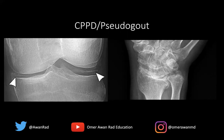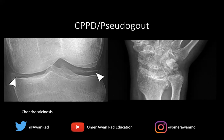It most commonly involves the knee, which I'm showing here, but it can also typically involve the wrist and hands. One of the characteristic findings is chondrocalcinosis — calcification of the hyaline articular cartilage. Notice that the calcification conforms to the shape of the meniscus or the hyaline cartilage around the knee. This is a finding characteristically seen in CPPD, though it can be seen in other arthropathies as well.